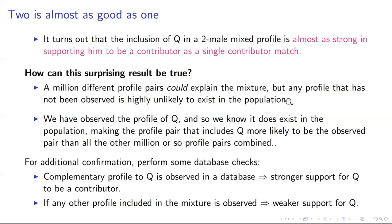The number of ways to assemble alleles at every locus into a 25-locus profile is astronomically large. Therefore, most of those possible profiles don't actually exist anywhere on Earth, because there are only several billion males and the potential number of Y profiles is vastly greater. Any random profile constructed by pulling out an allele at every locus is almost certain not to exist in the population. That's the fundamental intuition: those million other pairs that could explain the mixture probably don't exist.